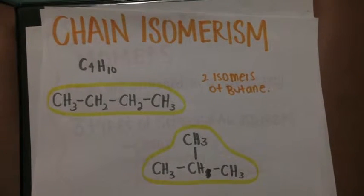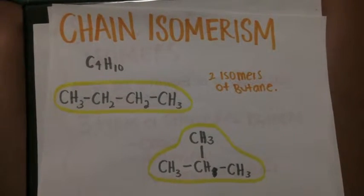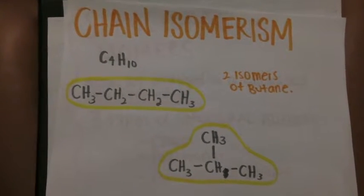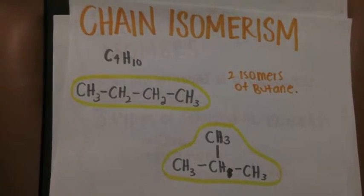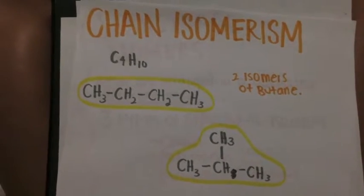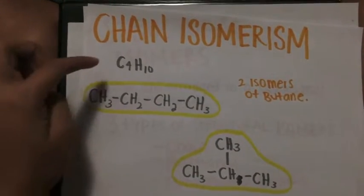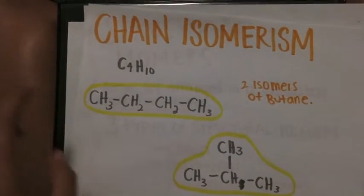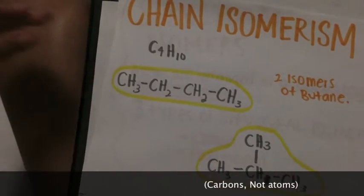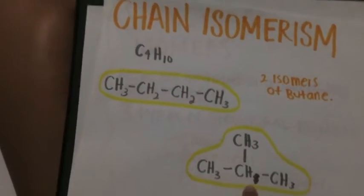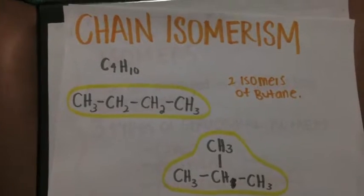Chain isomerism is possible because of the possibility of branching in carbon chains. For example, C4H10 has two isomers. In this one, the atoms are lying in a straight chain, and in this one, they are branched.